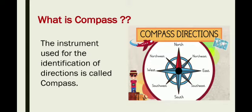A compass is an instrument that tells us where North is, where South is located, where East is, and where West is — whenever we are standing in any position or in any area or place in the world. As you can see in the picture, the upper direction is North, the right side is East, the lower side is South, and the left side is West.